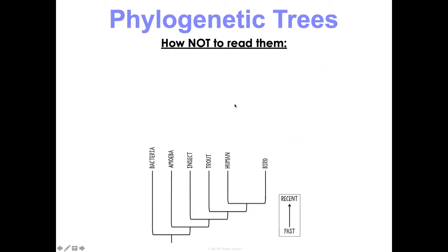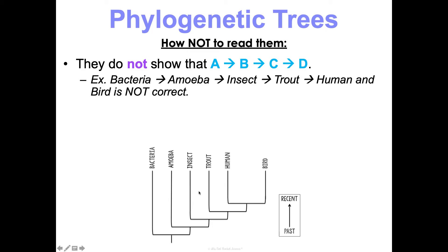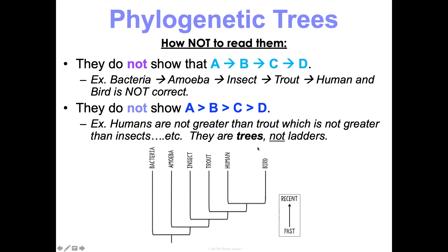Here's what's really important — how NOT to read them. These do not show that species A diverged into B, which diverged into C, which diverged into D. So looking at this tree, it's not the case that everything was bacteria and then some became amoeba, some turned into insects, some into trout, some into humans and birds — that's not correct. They also do not show that A is greater than B, greater than C, greater than D. Just because you diverge last does not mean you're better. Humans are not greater than trout, which is not greater than insects. They are trees, they are not ladders.